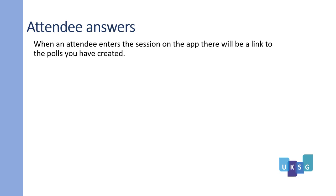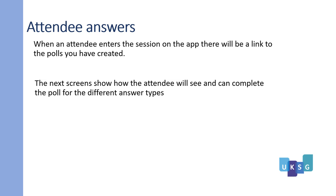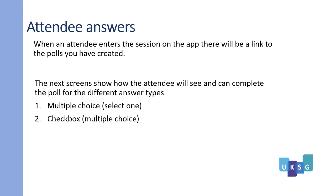When an attendee enters a session on the app, there will be a link to the polls you have created. The next screen shows how the attendees will see and can complete the poll for different answer types — that is multiple choice, where they select one; checkbox, where they have multiple choice; short answer; and star rating.